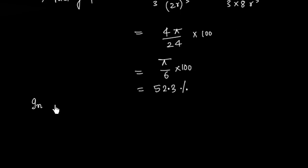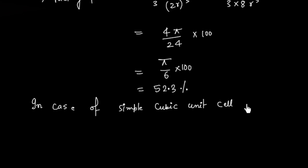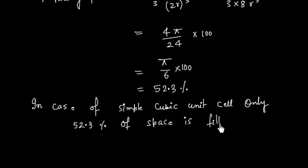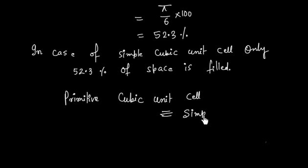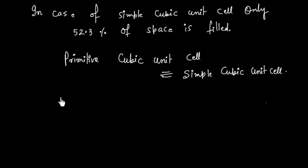In the case of a simple cubic unit cell, only 52.3% of the space is filled. The simple cubic unit cell is sometimes also called the primitive cubic unit cell — they are the same. Two important points: first, the edge length and radius are related by a = 2r; second, each corner atom has a 1/8 contribution.